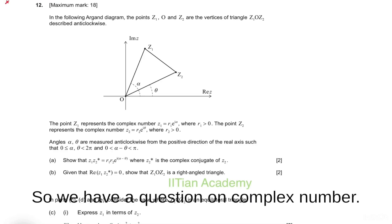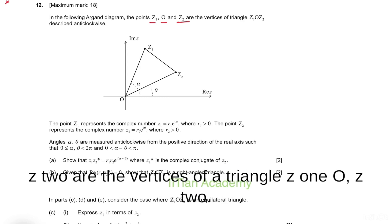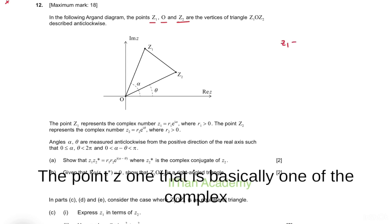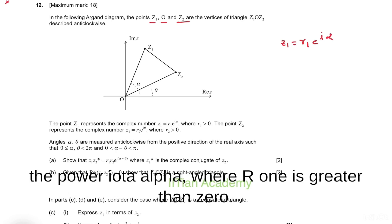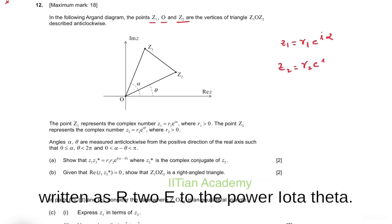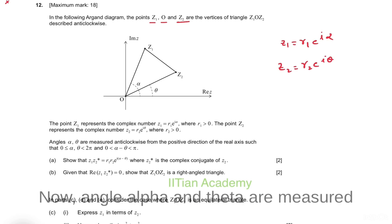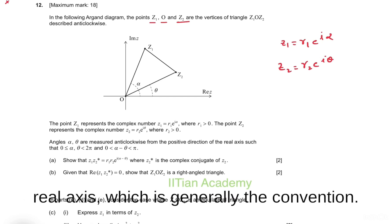Hello friends, we have a question on complex numbers. In the Argand diagram, points z1, O, and z2 are the vertices of a triangle z1Oz2. The complex number z1 can be written as r1·e^(iα) where r1 > 0, and similarly z2 can be written as r2·e^(iθ). Angles α and θ are measured anti-clockwise from the positive direction of the real axis, which is the general convention.